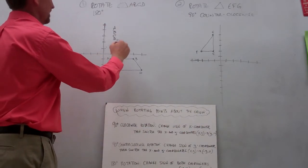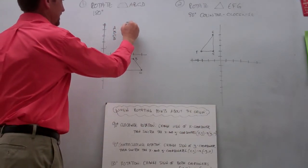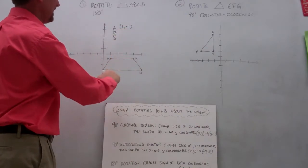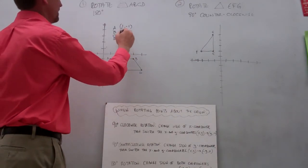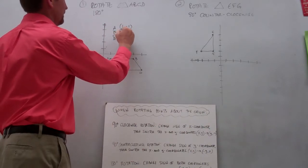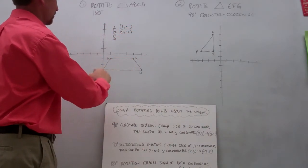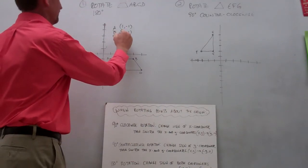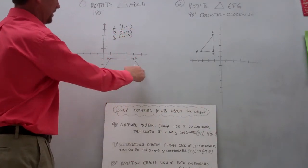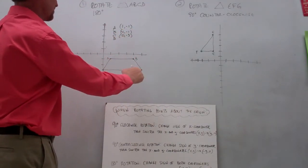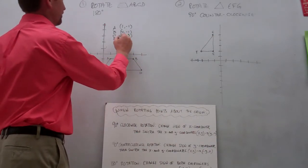Point A has coordinates of 1, negative 1. Point B has coordinates of 4, negative 1. Point C has coordinates of 0, negative 3. And point D has coordinates of 5, negative 3.